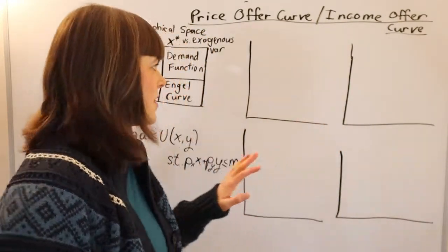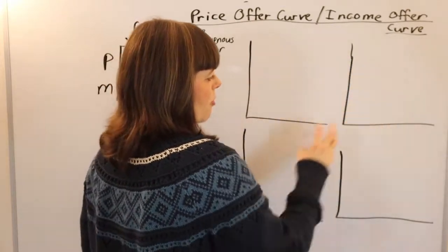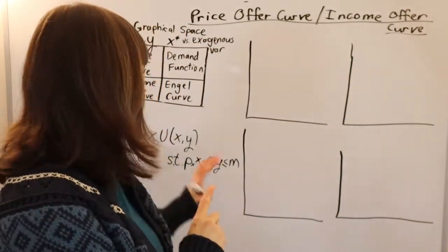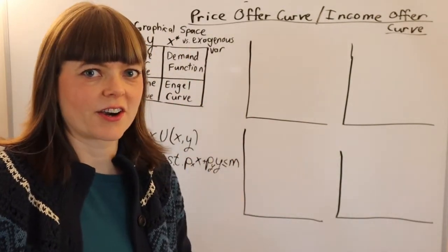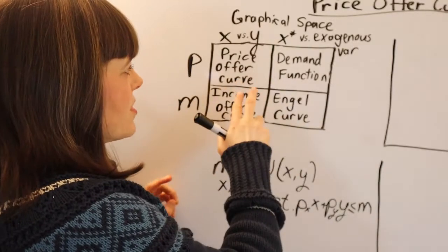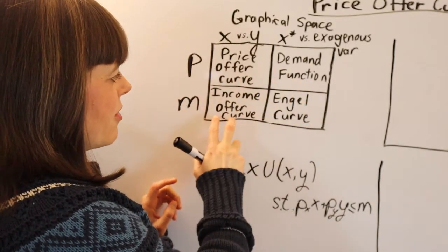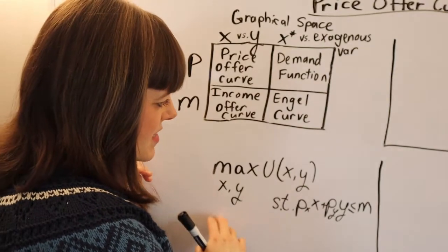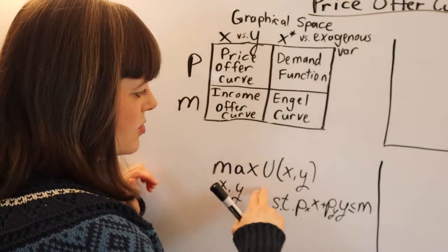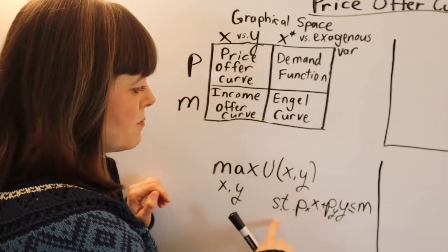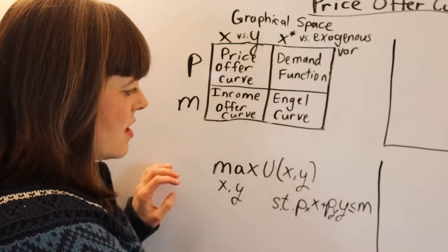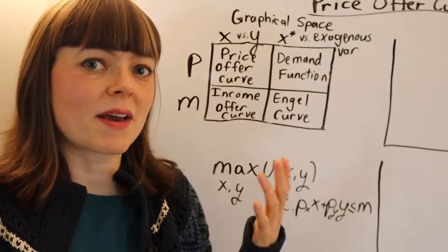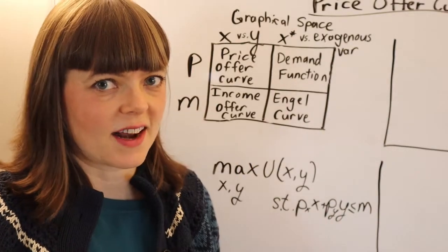So what I'm going to do in this video is draw all four of these curves and how they relate to each other. The four things I'm going to draw are the price offer curve, demand curve, income offer curve, and Engel curve. These are all derived from the utility maximization model subject to a budget constraint, and they're all going to be manifestations of comparative statics.